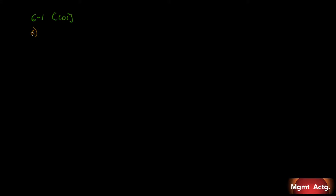Raw materials were issued for use in production. The molding department: $28,000. Firing department: $5,000. So we have to record this. It's leaving raw materials inventory, so we know that's the credit. And it's entering work in process. But there are two departments, so we call it work in process molding, $28,000, and work in process firing department.